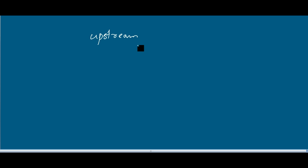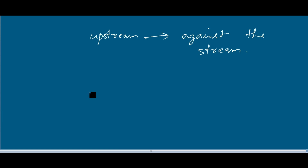This next sum is also of the same type, but in this case the boat is traveling upstream — that means against the stream. Upstream means against the water stream, so in this case the water stream will oppose the boat.